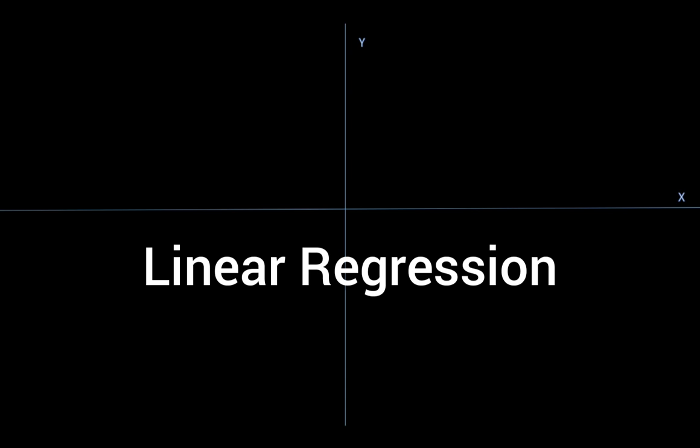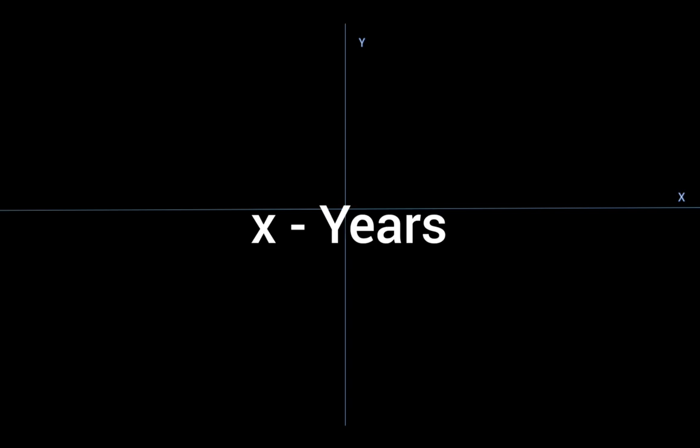What is happening? How to implement it? Suppose I have some data in X and Y. X can be something like year, Y can be something like prices. So there are many data points.